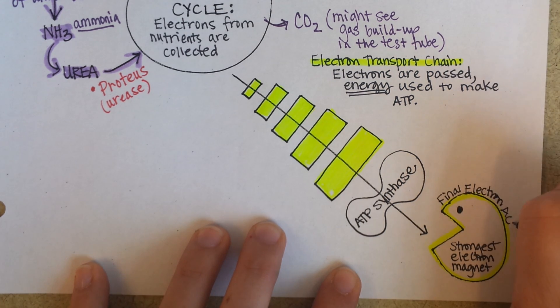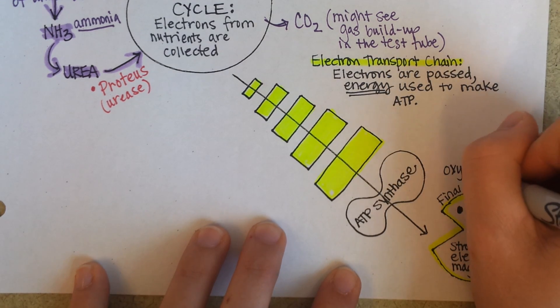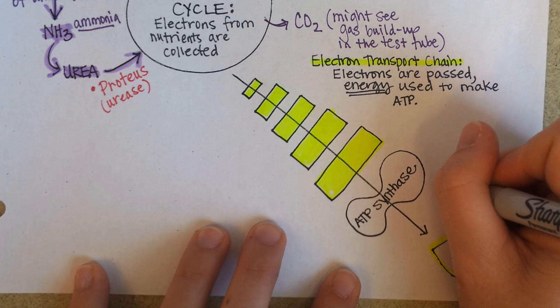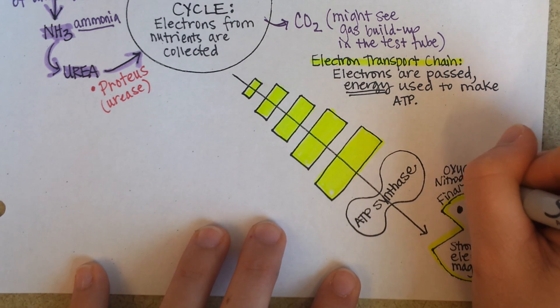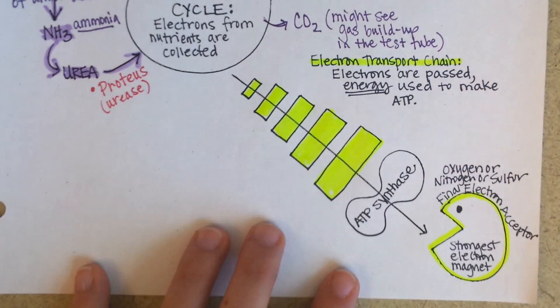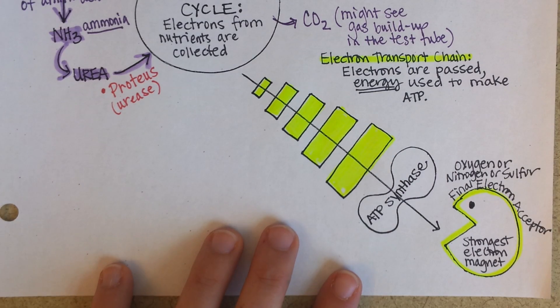So the final electron acceptor is either oxygen or nitrogen or sulfur or possibly some other strong electron acceptor, although these are the ones I'm most familiar with.